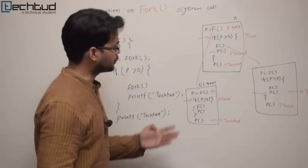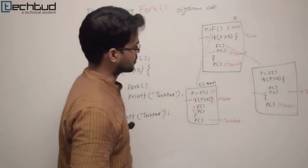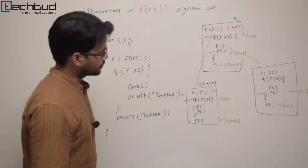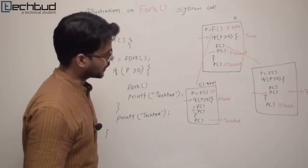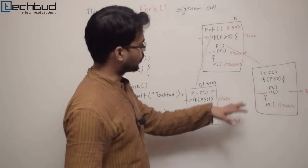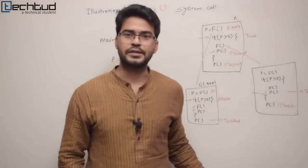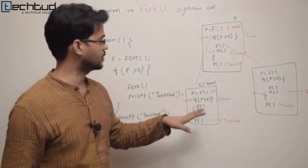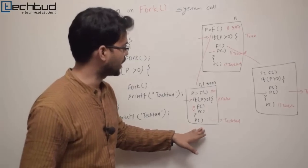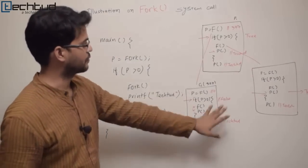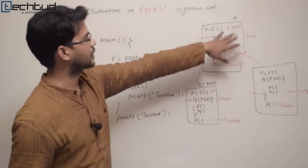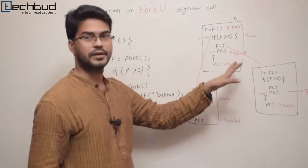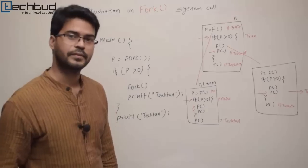Now there can be a question: what is the order of these print statements? Which process will execute first — will the child execute first, then the parent, then the second fork? What will be the order?